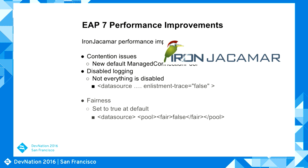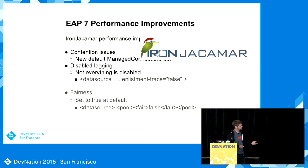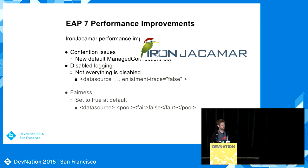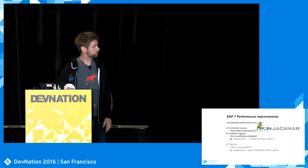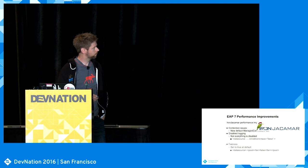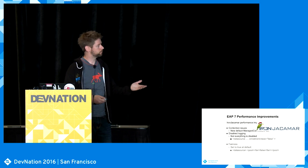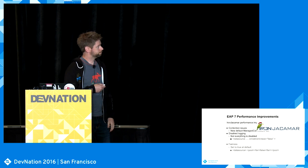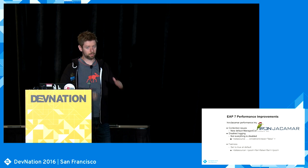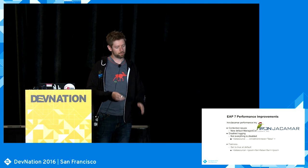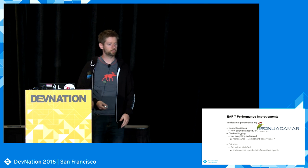IronJacamar is our JCA implementation — it handles all the connections to the database. Under EAP6 we saw a big contention issue with the managed connection pool. In EAP7 there is a new default pool that is a lot more performant when you have many threads trying to get a connection. In EAP6, some logging was enabled by default — we turned that off. Unfortunately not everything is disabled: 'enlistment trace', if you don't set it to false under data source, will cause IronJacamar to create an exception object every time you fetch a connection, walking the whole call stack — a really costly operation. Also, the 'fairness' setting defaults to true; under high contention it's a lot better to set it to false.